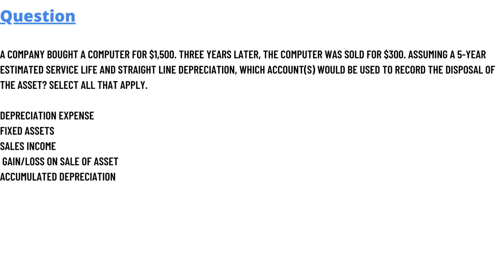We have five accounts given and we have to select which account is recorded for the disposal. Number one account is depreciation expense, fixed asset, sales income, gain/loss on sale of asset, and accumulated depreciation.